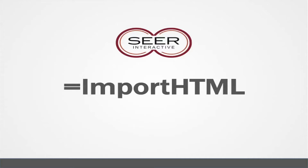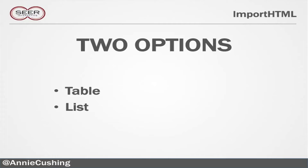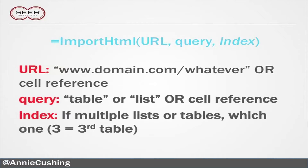Next up we have importHTML. There are two options: you can import tables and lists. Lists are just unordered lists, like bullet points or numbered lists. The structure is pretty straightforward — you have three arguments: the URL (same as before, you can embed it or put it in a separate cell), then query, which is just going to be 'table' or 'list'. And then there's an optional index argument — if you want to scrape a particular table but there are multiple tables on the page, you just have to figure out which one. If you don't get what you want, I just keep switching the index until I get what I want.